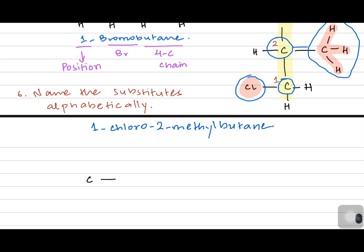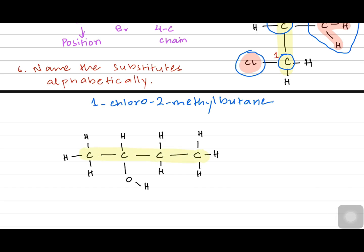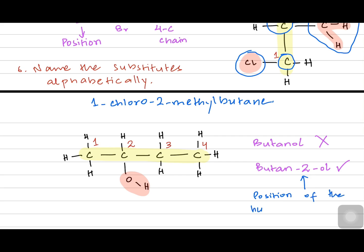Now let's look at an alcohol example using a displayed formula. This is a four-carbon alcohol where the hydroxyl functional group is towards the left. Numbering from the left: one, two, three, four. The position of the OH group is carbon two, so the name is butan-2-ol. The number two signifies the position of the alcohol — the hydroxyl functional group.